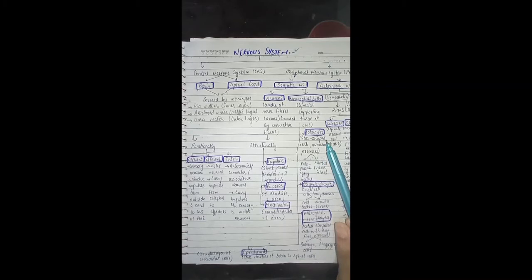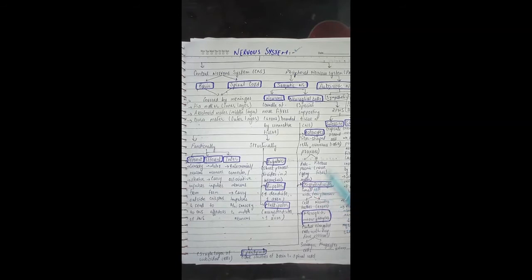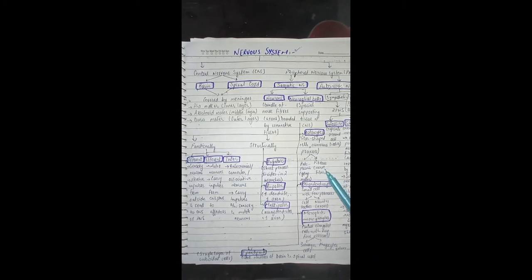Number one is astrocytes. Astrocytes are star-shaped cells and they have numerous processes, which are dendrites. Astrocytes found in grey matter are called protoplasmic astrocytes. In grey matter, there are non-myelinated axons. If they are associated with fibers in white matter, we call them fibrous astrocytes.